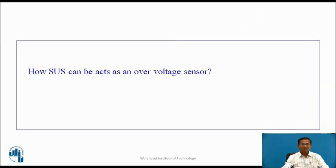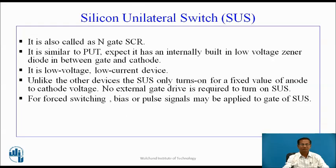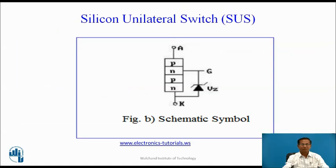How SUS can act as an over-voltage sensor? When over-voltage appears across SUS that is across anode-to-cathode, the internal zener diode breaks down and once the internal zener diode breaks down, SUS conducts and it maintains the safe low voltage. In this way, SUS acts as an over-voltage sensor.